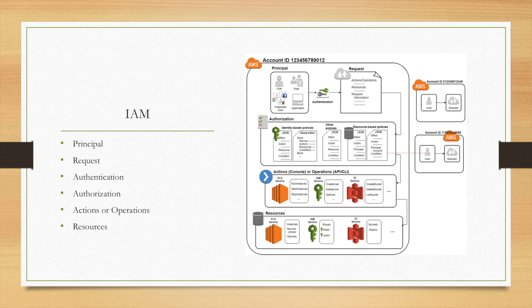For IAM, it has several important terminologies. As shown in the diagram, the principle sends a request with authentication, then it needs authorization. The authorization requires actions or operations, and then it accesses the AWS resources. Let's explain each of these terminologies in detail.